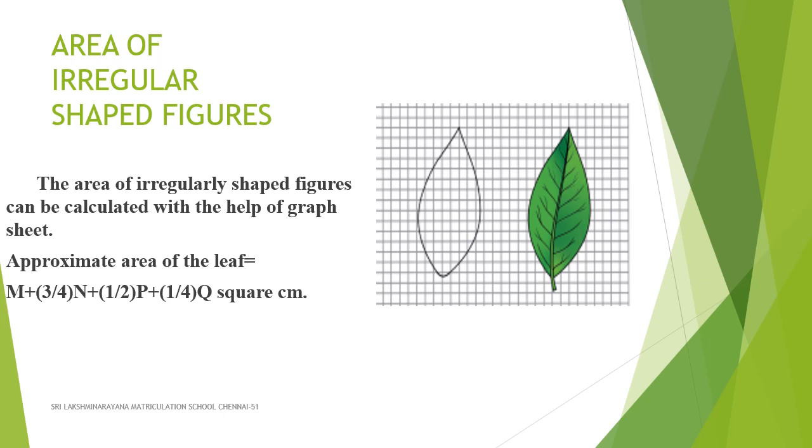Now, count the number of whole squares enclosed within the outline of the leaf. Take it to be M.